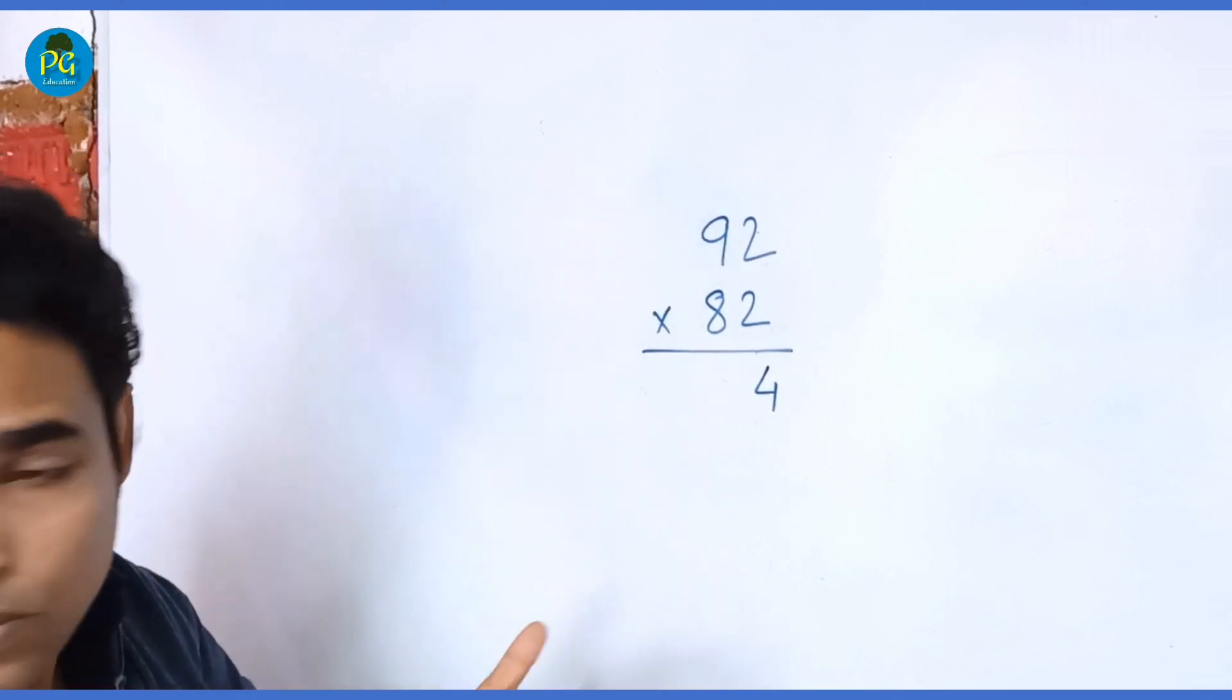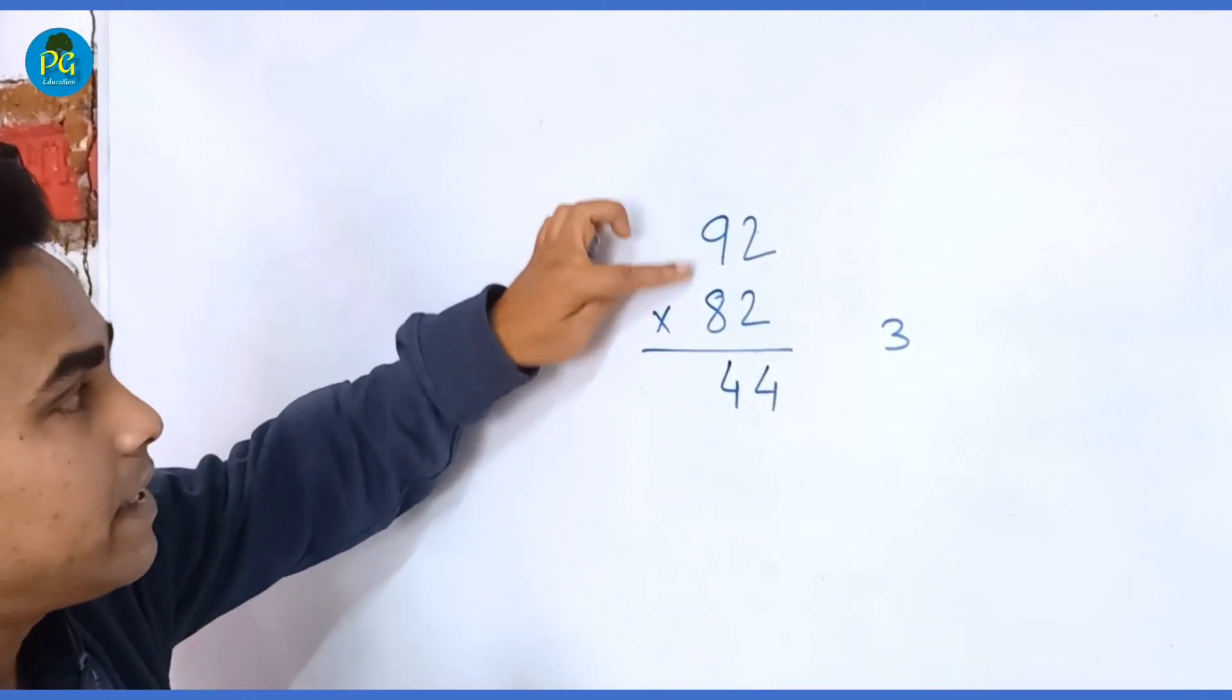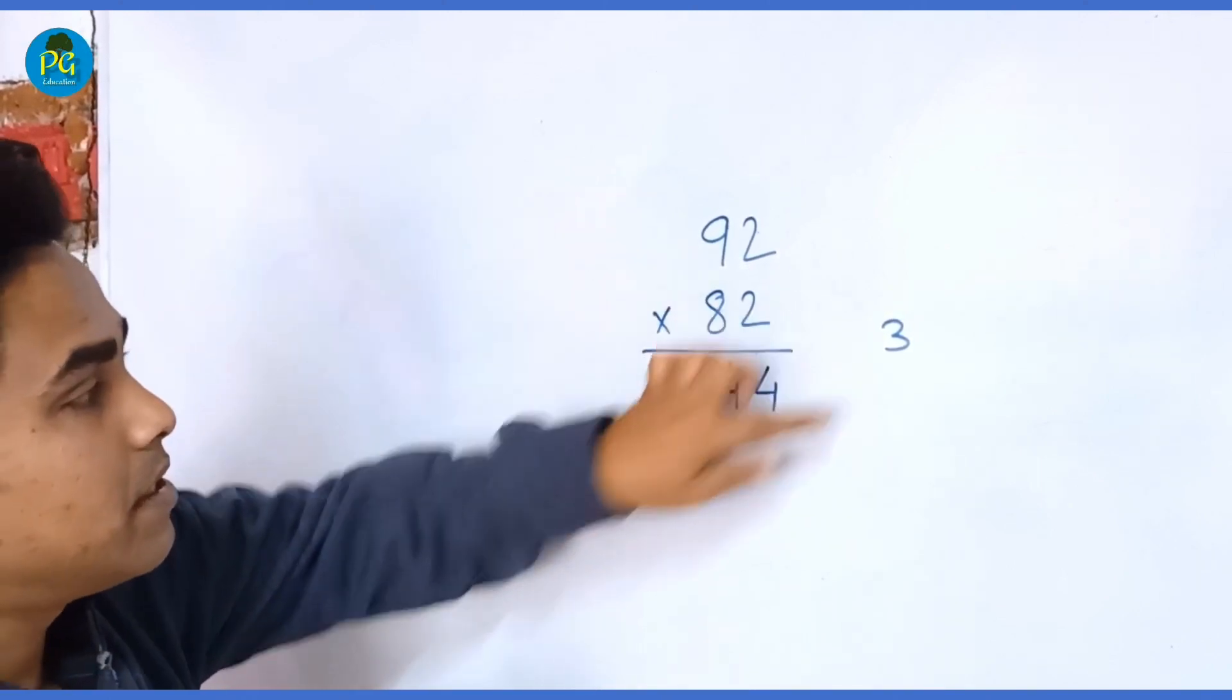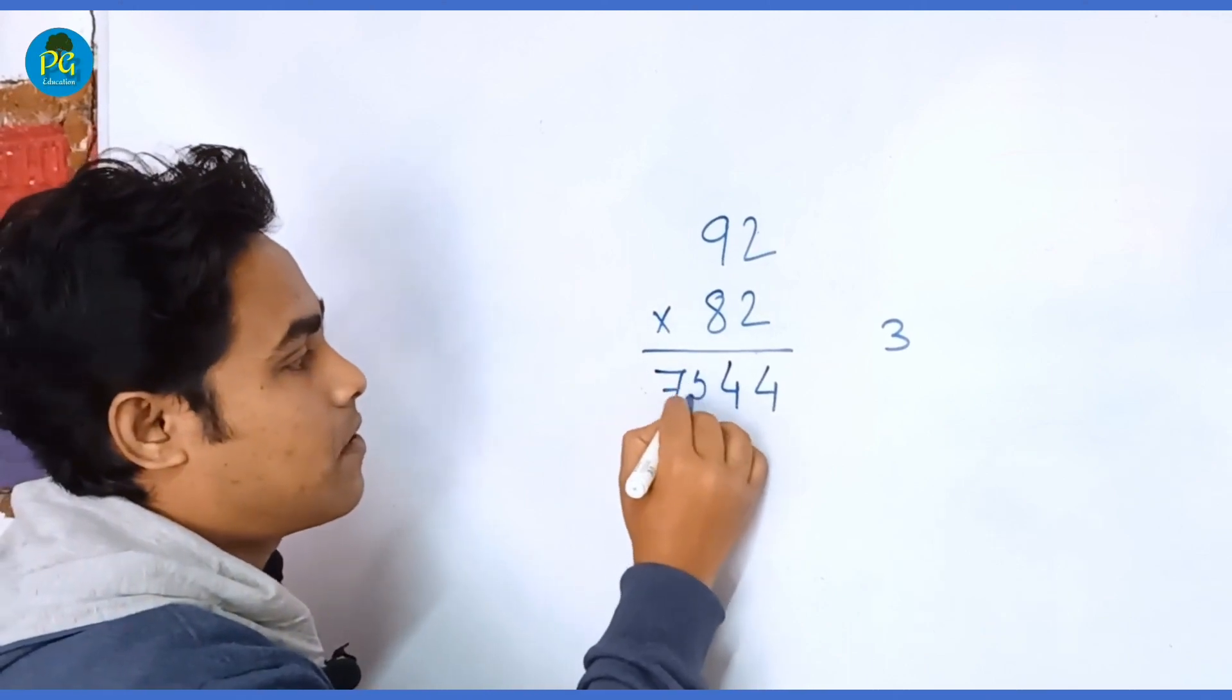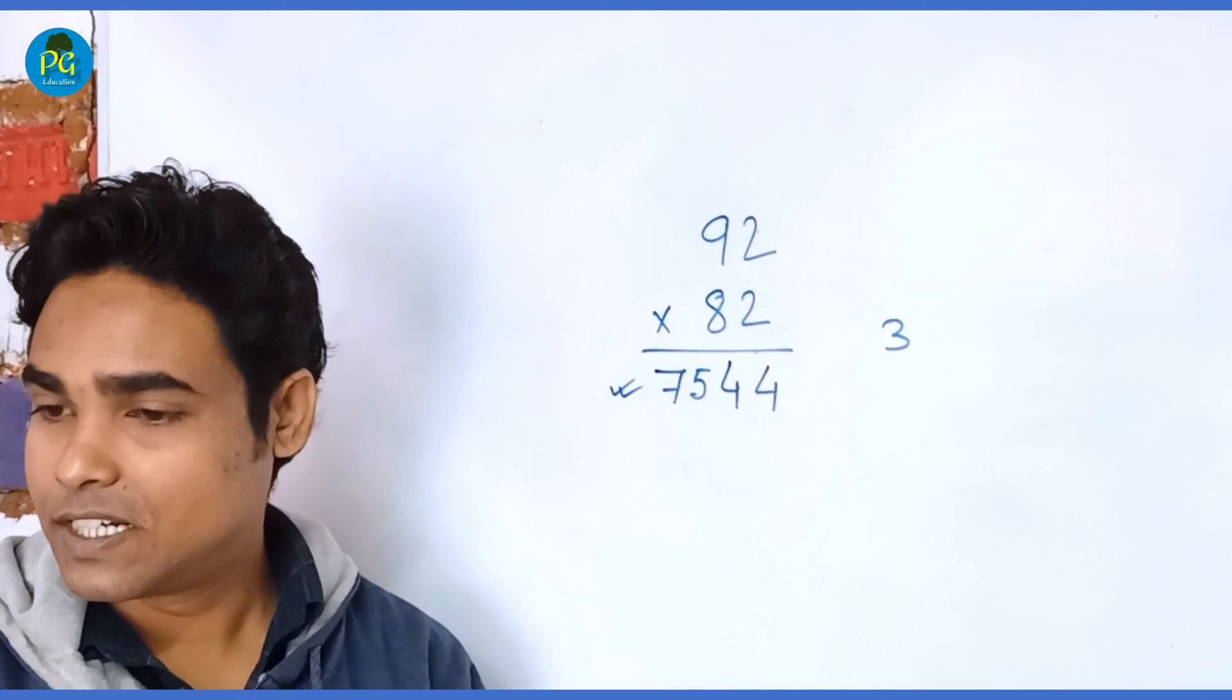And finally 8 into 9 is 72, plus 3 is 75. So 7544 is the answer. I hope you understood.